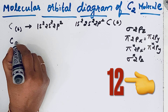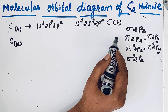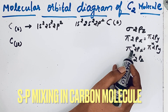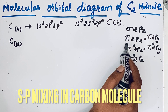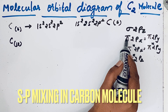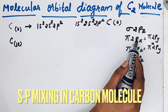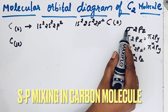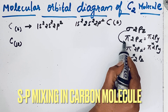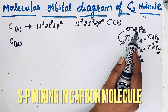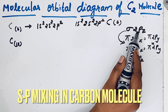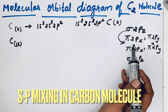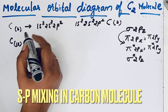In carbon molecule we need 12 electrons in total. Due to sp mixing, the energy order is reversed — after filling pi 2px and pi 2py, then only we fill sigma 2pz, because due to sp mixing this 2pz orbital gets higher energy. So let us draw the molecular orbital configuration.